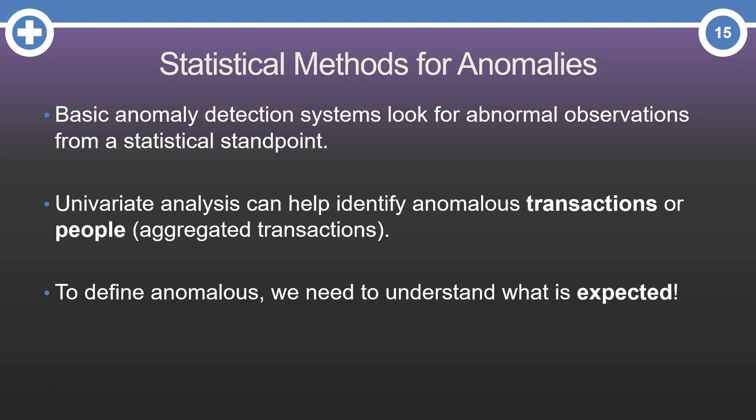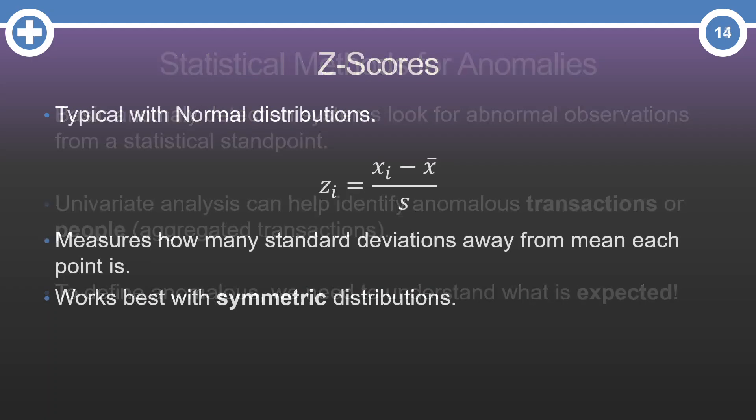When it comes to basic anomaly detection, statistical methods can be used to look for anomalous observations. A lot of times we start by looking one variable at a time to help identify anomalous transactions or people from the perspective of that variable. Of course, if we're looking for anomalies in a variable, we first need to know what we expect that variable to look like.